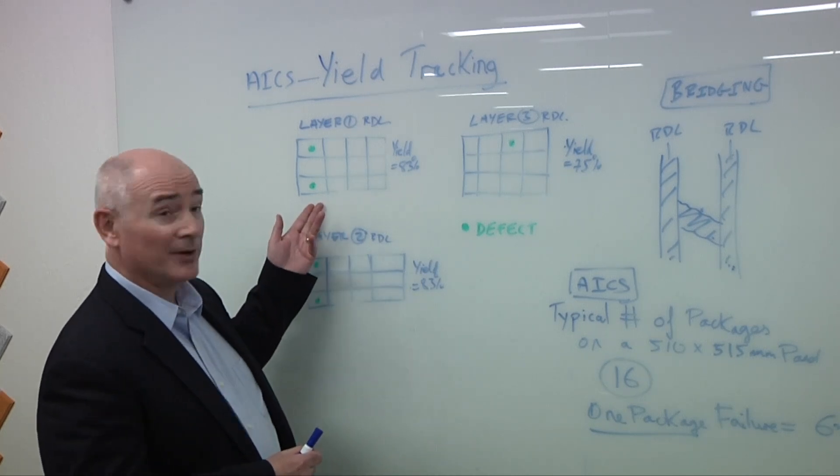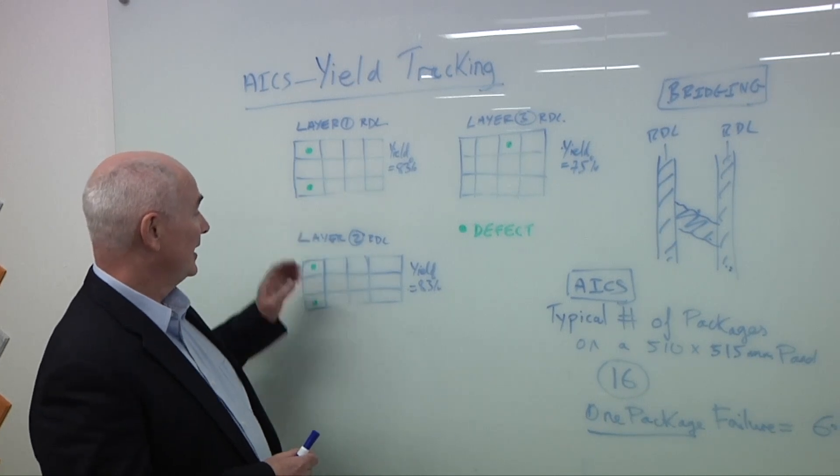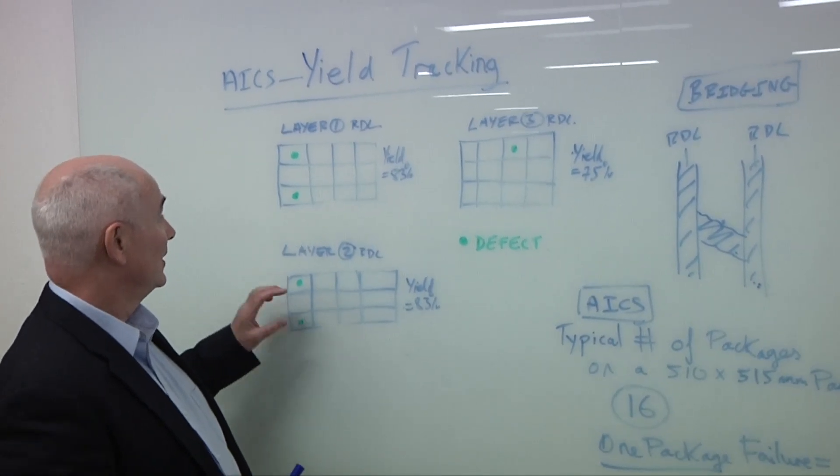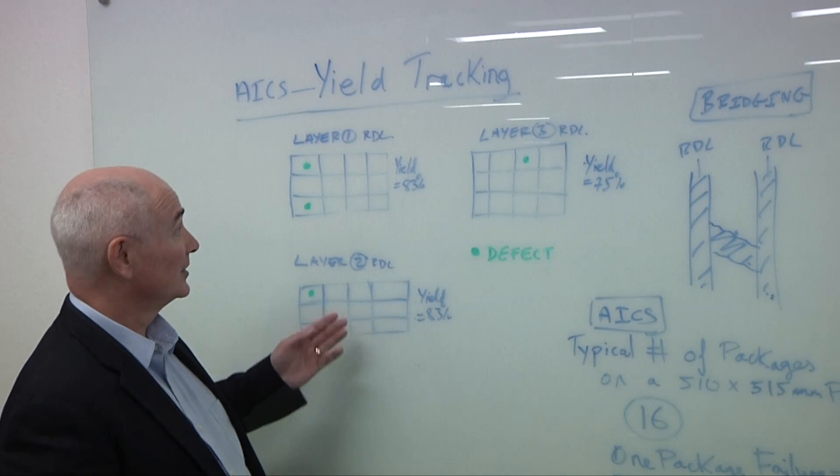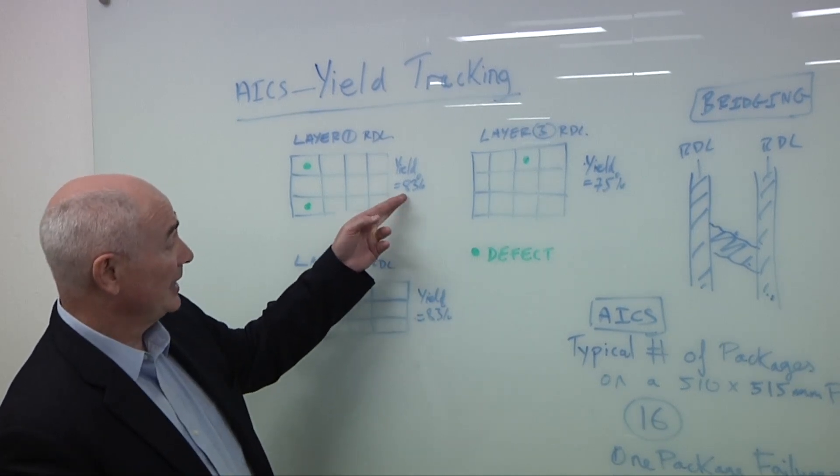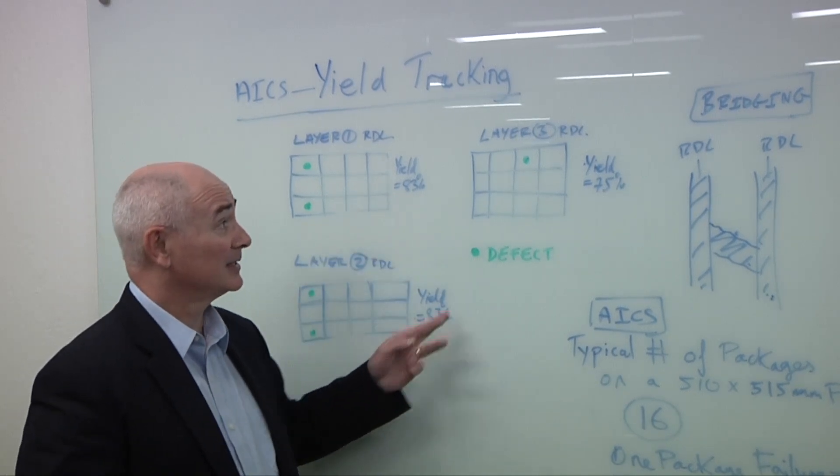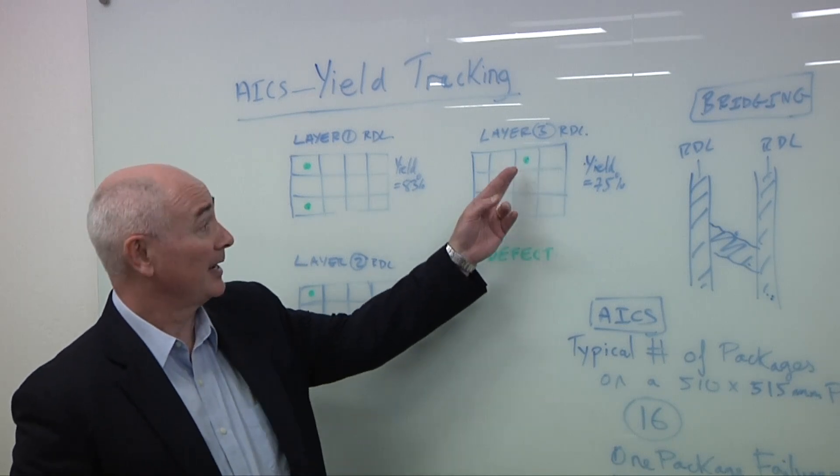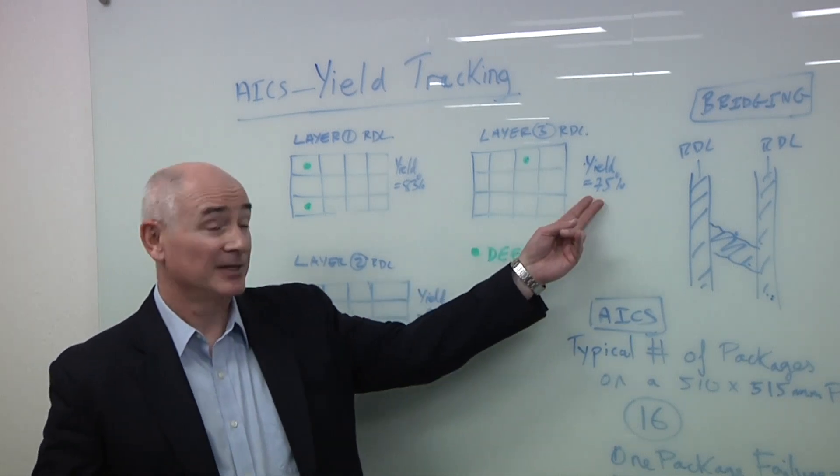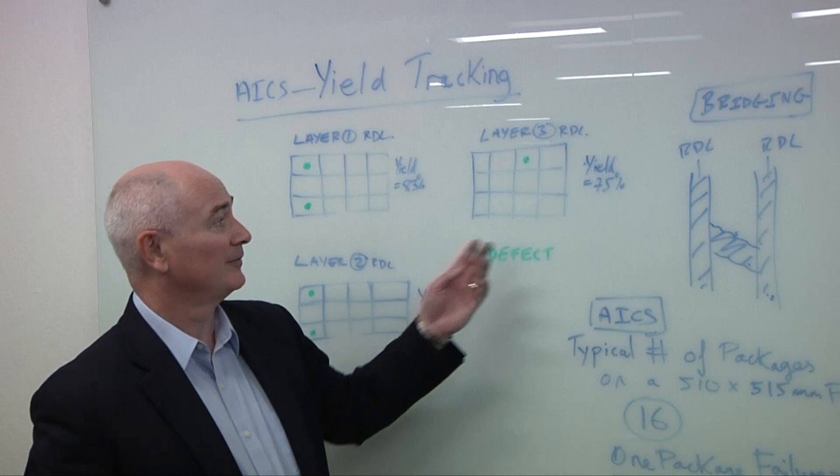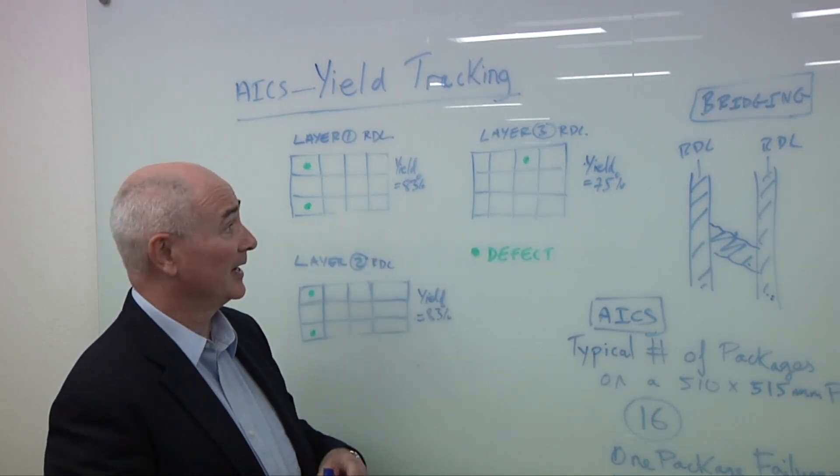So of course, layer one here, I show two killer defects in these packages. And then I get to layer two, the same defects are there, no more defects. So the yield maintains the same number, 83%, 83%. When we get to layer three, a new package ends up being defective, giving me a 75% yield. You can see the impact of yield is dramatic because they're so enormous, these packages.